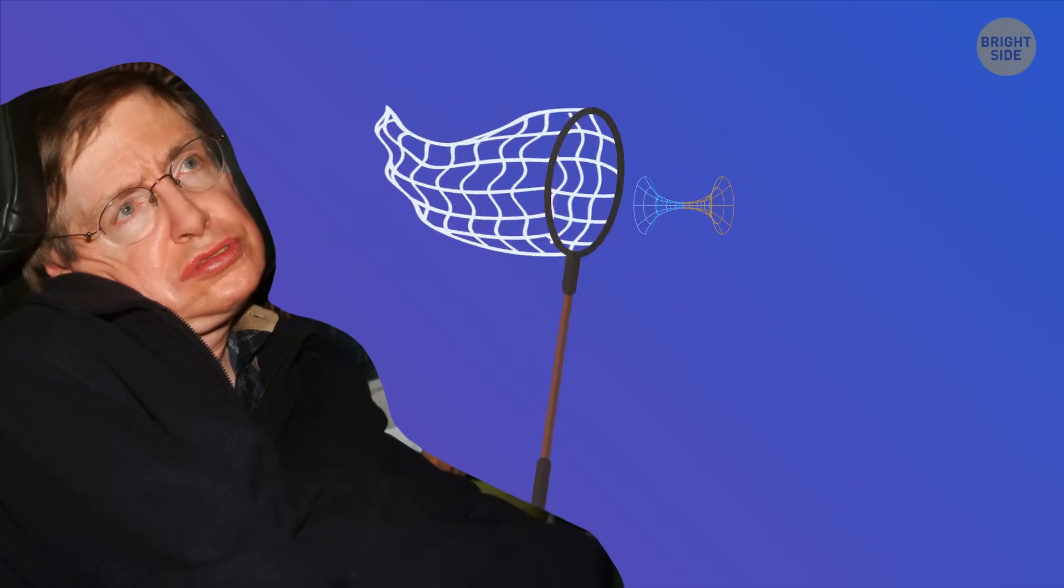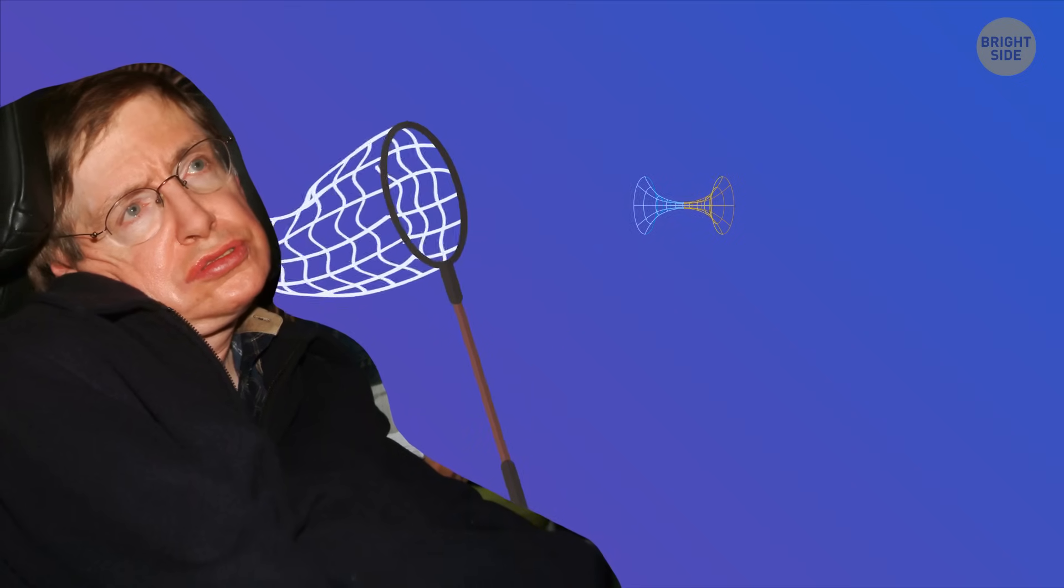Many scientists, like Stephen Hawking, think that wormholes might appear and disappear, but be very small, smaller than atoms. The problem is that we don't know how to catch one and make it bigger so that people can use it. This would take a lot of energy, and we don't know if it's even possible.